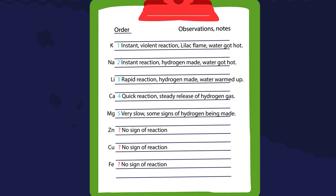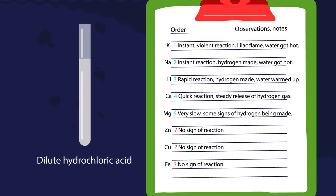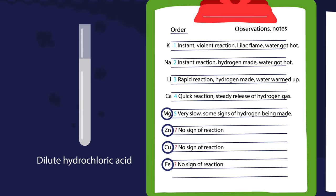If the experiment is repeated with dilute hydrochloric acid, we can reveal the different chemical reactivity of the metals that have not yet been ranked.